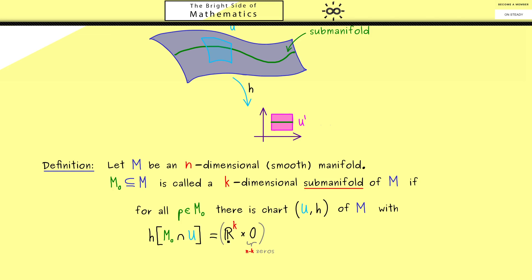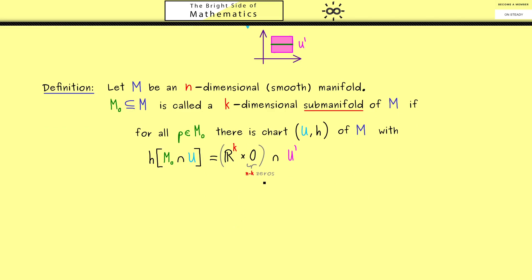Therefore, we need n components here, and we can just fill up the other ones with zeros. So here you see, this is just R^k embedded in the bigger space R^n. Therefore, we need exactly n-k zeros. Moreover, the whole thing should also lie in u', therefore we need the intersection with u'.